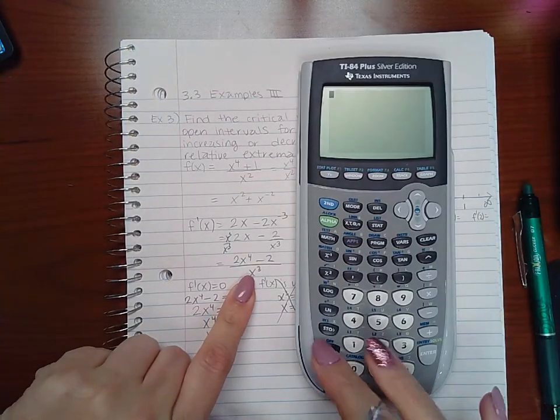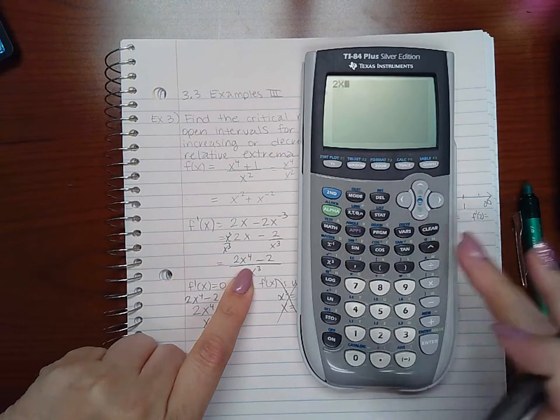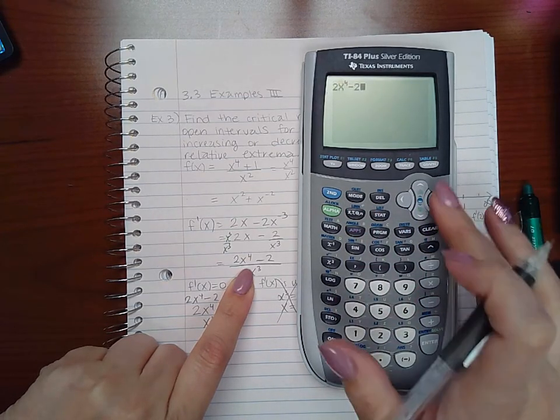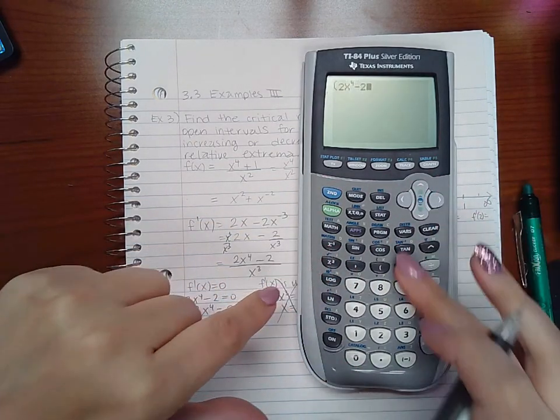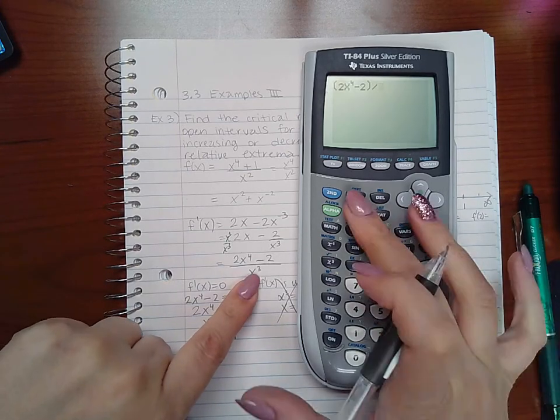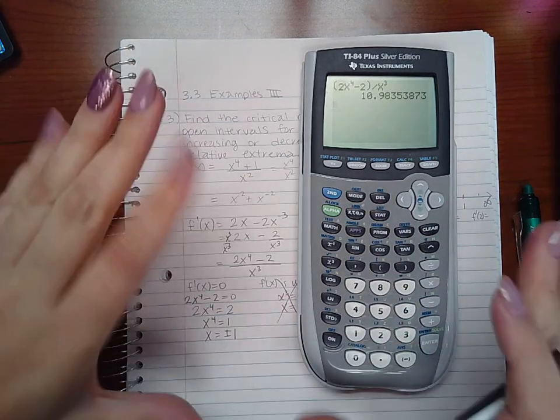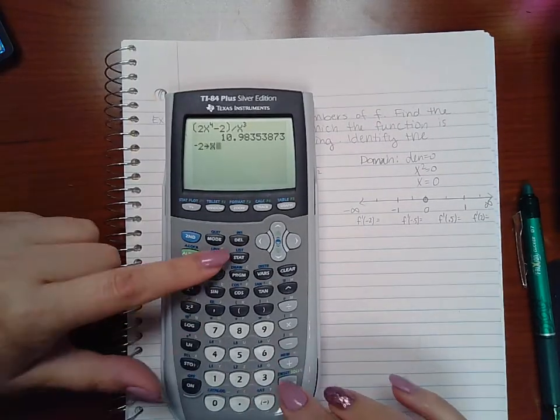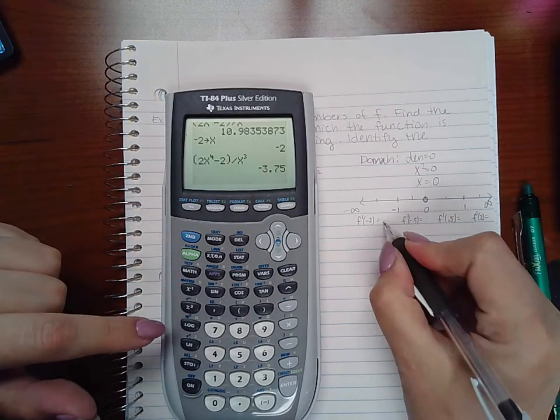Using the derivative, I enter 2x to the fourth minus 2 in parentheses, divided by x to the third. Plugging in negative 2 gives a negative value.